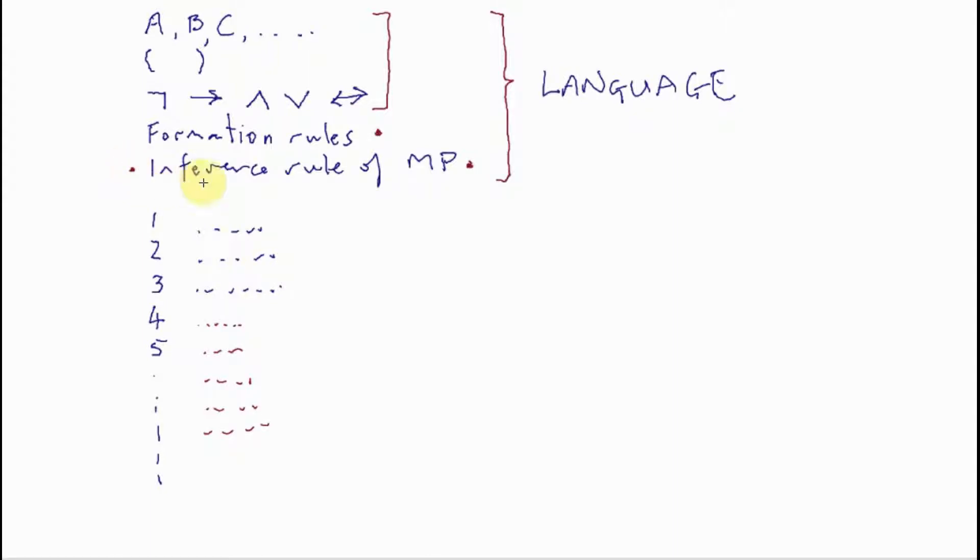And we've already hinted at how that might be done, how we're going to proceed to do that, by labeling this inference rule modus ponens—an inference rule, inference is rather suggestive—and by the names, the English equivalent names that we've associated with these connectives: negation, implication, conjunction, disjunction, and mutual implication.